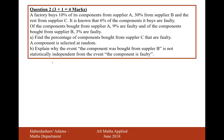What we want to work out is effectively an equation: faulty from A, plus faulty from B, plus faulty from C. This will add together to make 0.06, that's 6%. So we want to work out the proportion of this 6% that comes from A, that comes from B, and that comes from C.